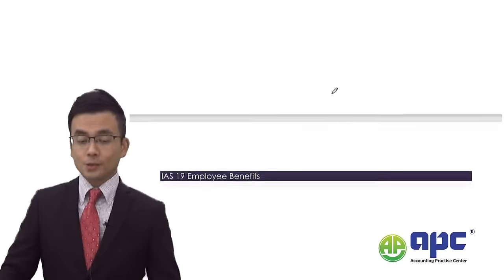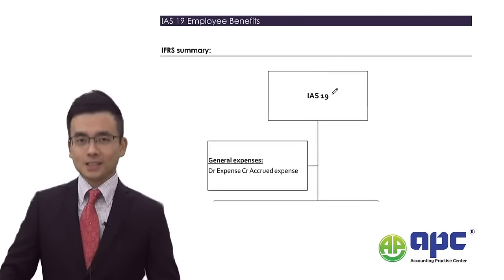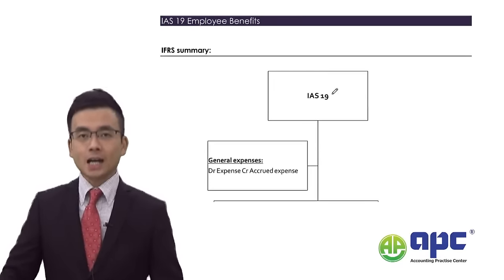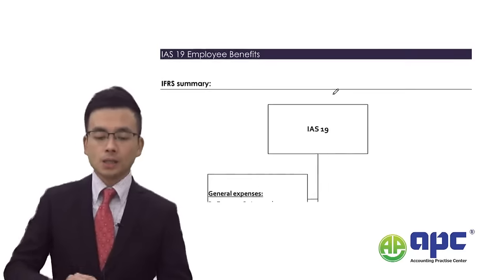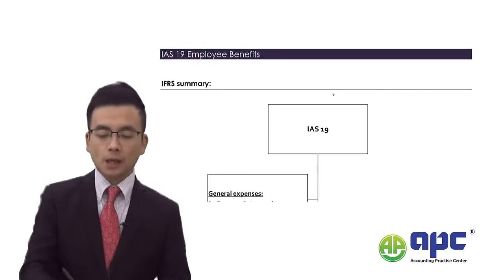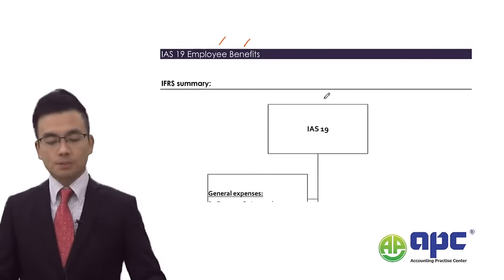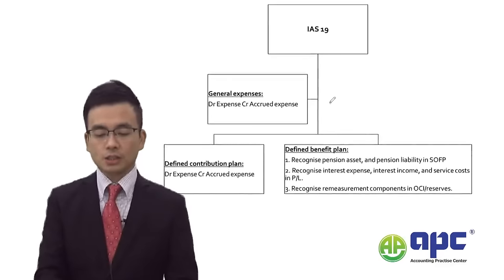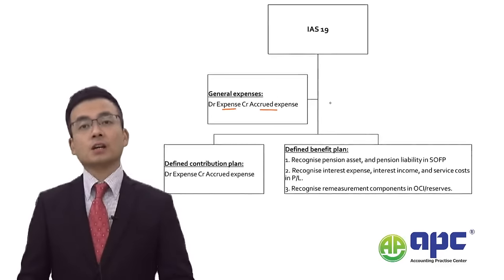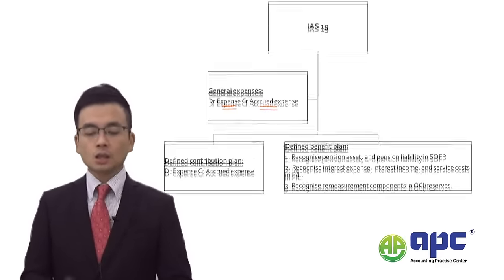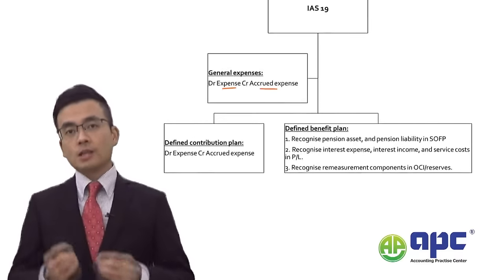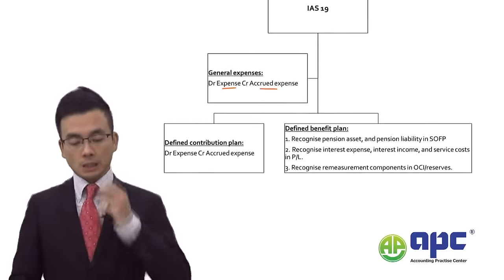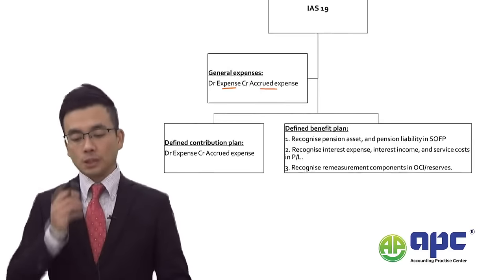That's all we have for IAS 16. Next, we look at IAS No. 19, Employee Benefits — the expense paid to employees, where we debit expense and credit bank. If unpaid, we credit the accrued expense. In exams, the pension plan is particularly important.